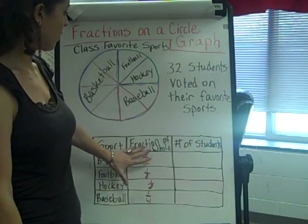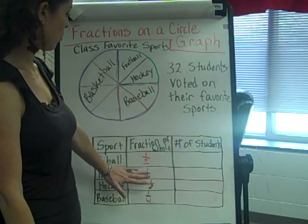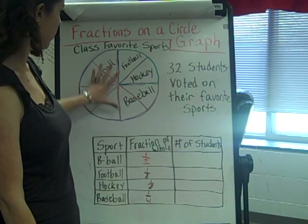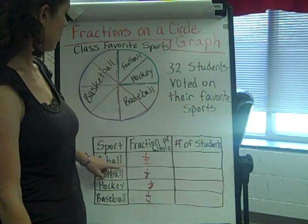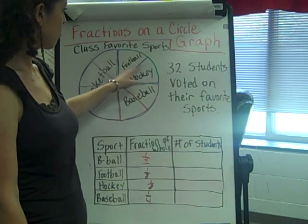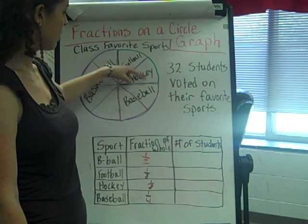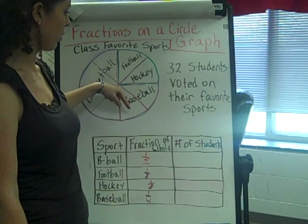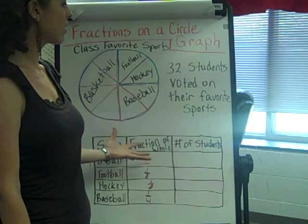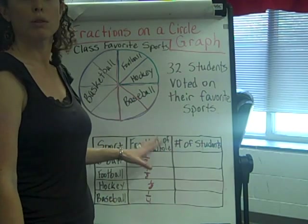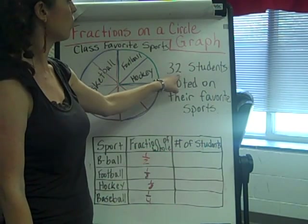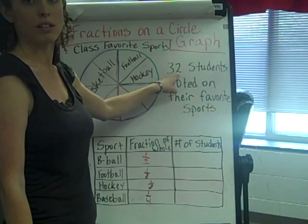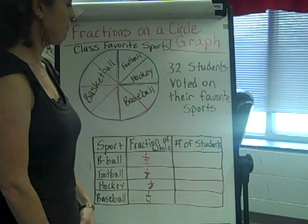So we have our fractions of the whole: basketball is one half, football is one eighth, hockey is one eighth, and baseball is one fourth. What does that mean in terms of the number of students out of the total of thirty-two students that voted?